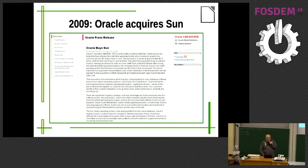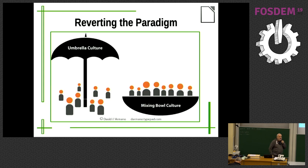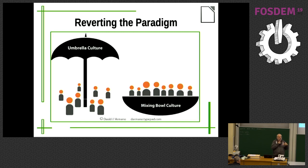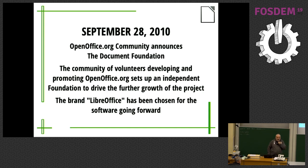We basically reversed the paradigm. Sun had been a nice umbrella for the community, but we decided to turn the umbrella around and empower the community. So on September 28, 2010, we forked and announced the project and the Document Foundation. This is the very first page of the website — it's obsolete today, but we structured the community according to our experience.